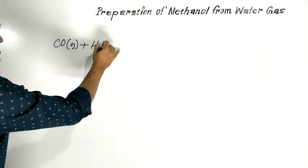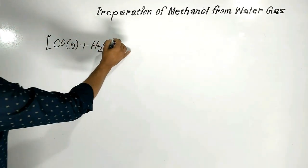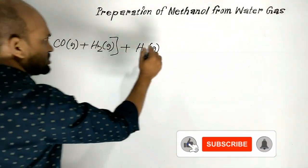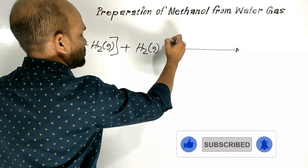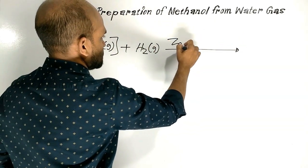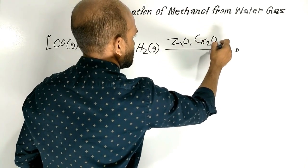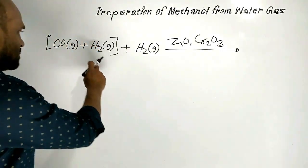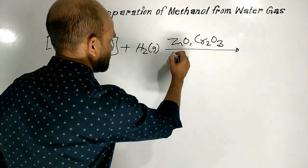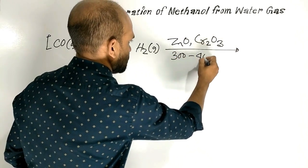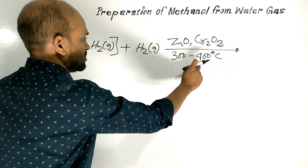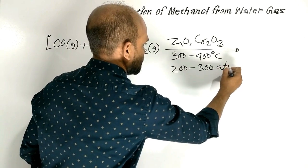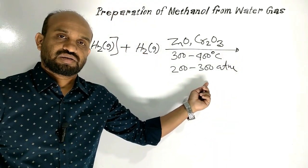Water Gas is mixed with Hydrogen Gas and this mixture is treated in presence of Zinc Oxide and Chromic Oxide catalyst. The reaction is conducted at 300 to 400 degree Celsius temperature and 200 to 300 atmosphere pressure.